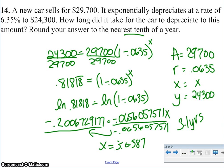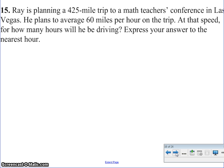All right, those are probably the toughest ones on there, so let's move on to some easier ones. Number 14, Ray is planning a 425-mile trip. To a math teacher's conference in Vegas, he's going to average 60 miles per hour. At that speed, how many hours will it take? Well, 425 divided by 60 is going to give us 7.08 miles or hours, and it says round to the nearest hour, so the answer is 7 hours.